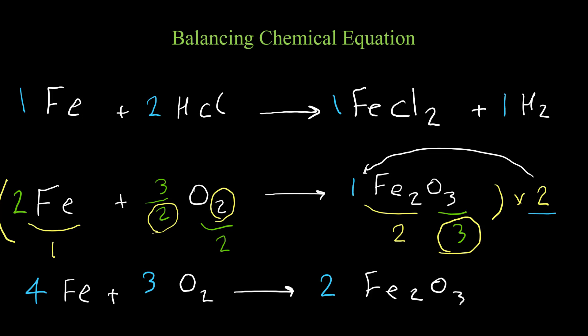It's good to always double-check at the end of balancing to make sure all atoms on both sides are equal. We have four iron on the left and two times two is four iron on the right. Three times two gives six oxygen on the left, and two times three gives six oxygen on the right. So this is our balanced equation.